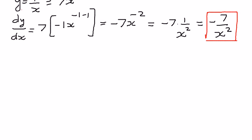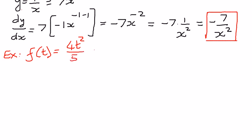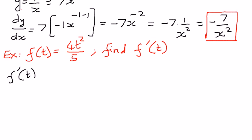Let us take another example. In this example, we have a function f of t is equal to 4t squared divided by 5, and we want to find the first derivative of this function with respect to t. We want to recognize that the constant terms here are 4 over 5 — we take that out. Then t to the power of 2 is in the power rule format, so n is equal to 2.